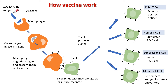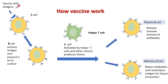Memory T cells make antibodies against antigens and memorize them for future encounters. This means that whenever the same antigen or same microbe enters the body, the prepared and stored antibodies will destroy them. Not only T cells but B cells also take part in making antibodies.